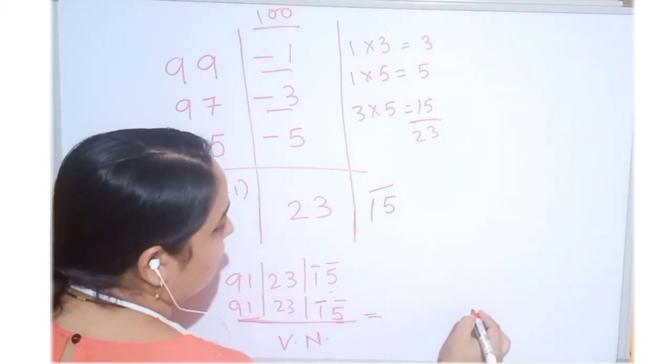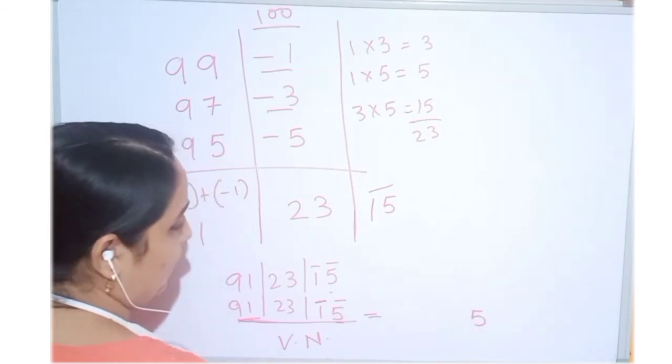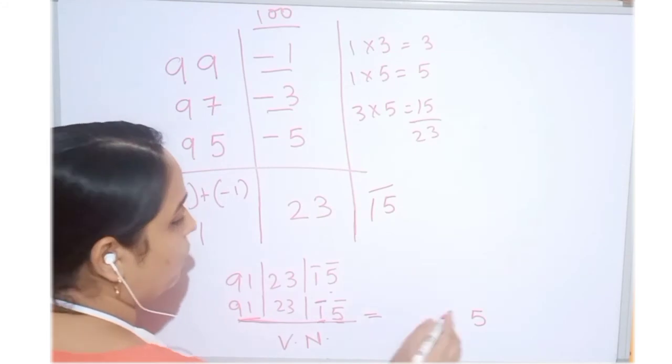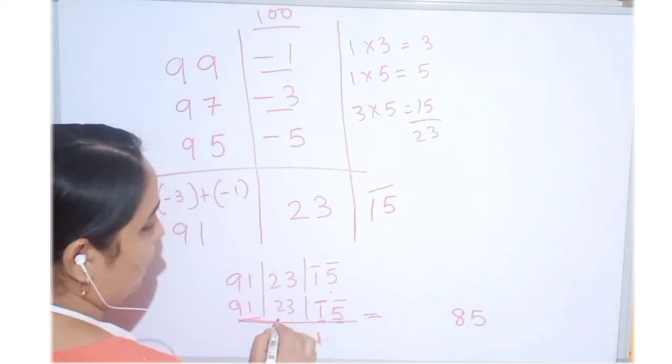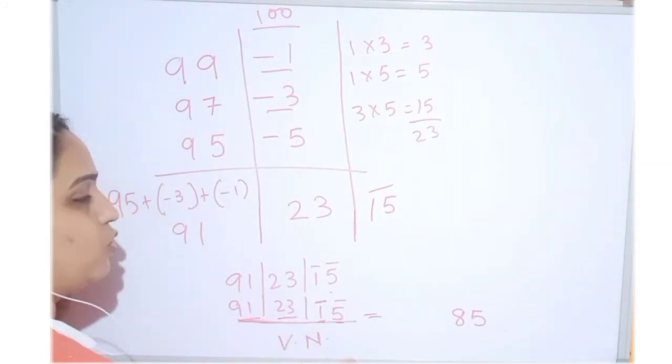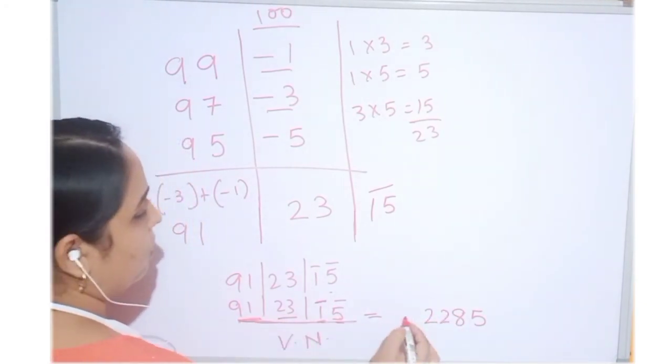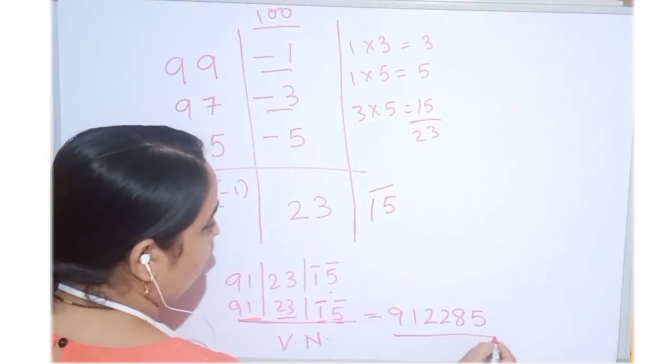We have to convert as per the rules of vinculum to normal number. This is 5 bar. So, minus from 10. We will get 5 here. This is 1 bar. We have to subtract from 9. So, we will get 8 here. Now, 23. So, we have to subtract 1 from it. We will get 22 and 91 as it is we will write.